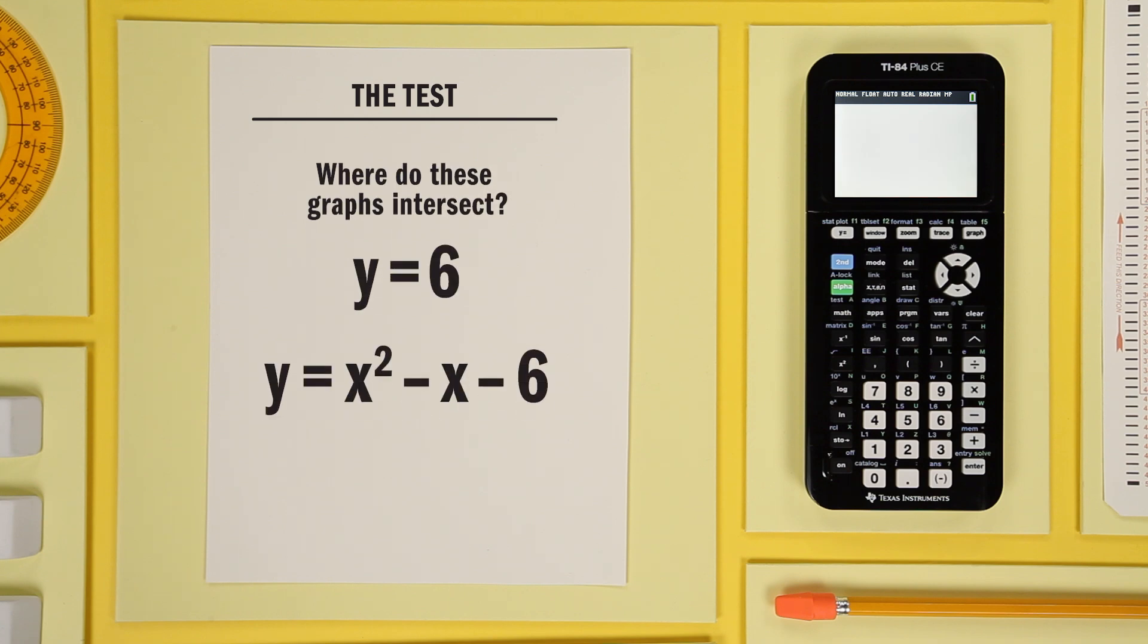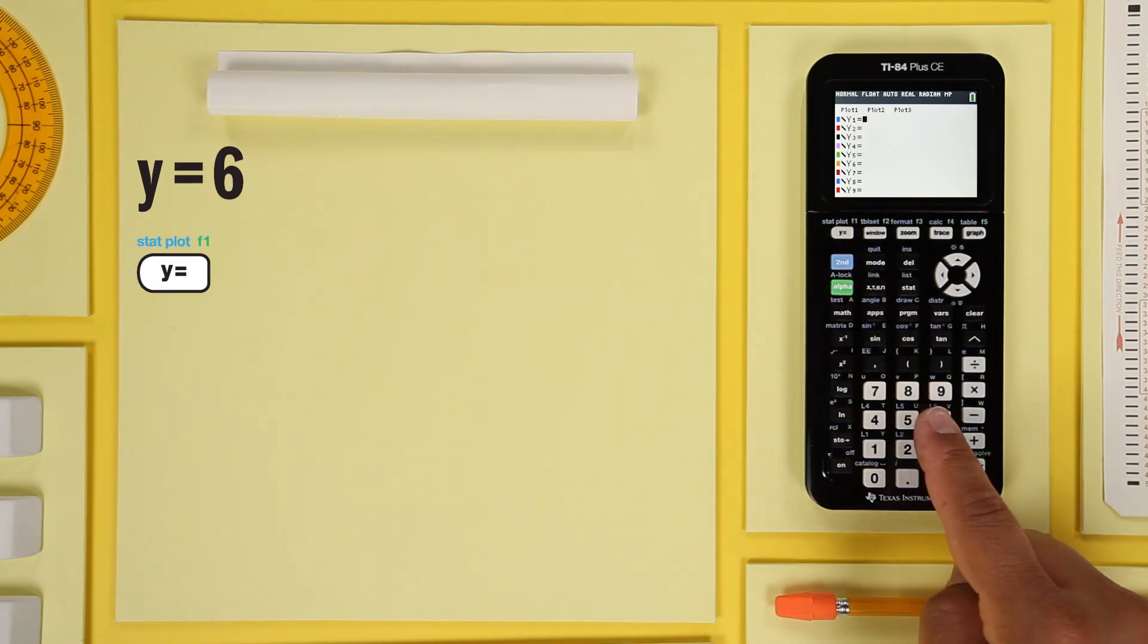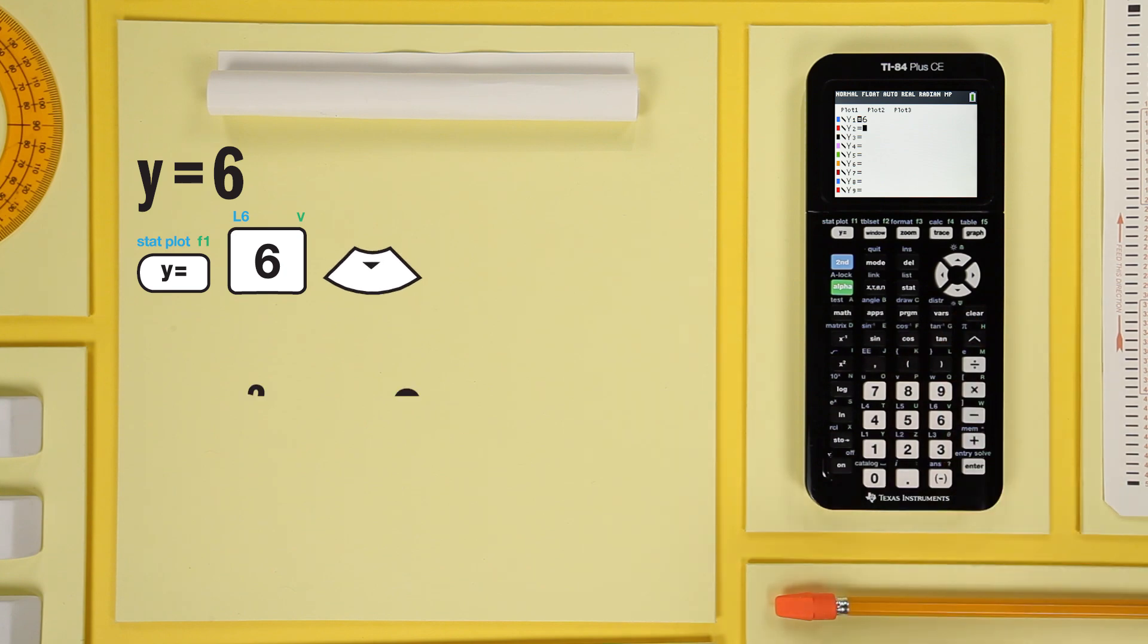Let's do one more. This involves a quadratic equation. The steps are basically the same, so I'm going to go through it without stopping. Enter the first equation and enter the quadratic.